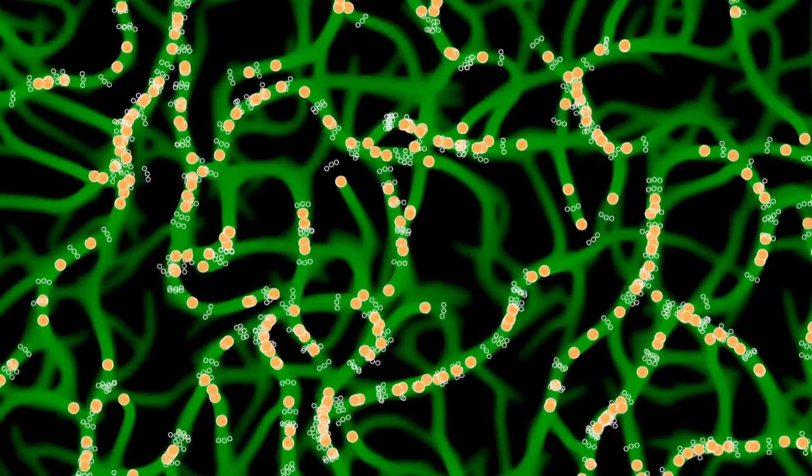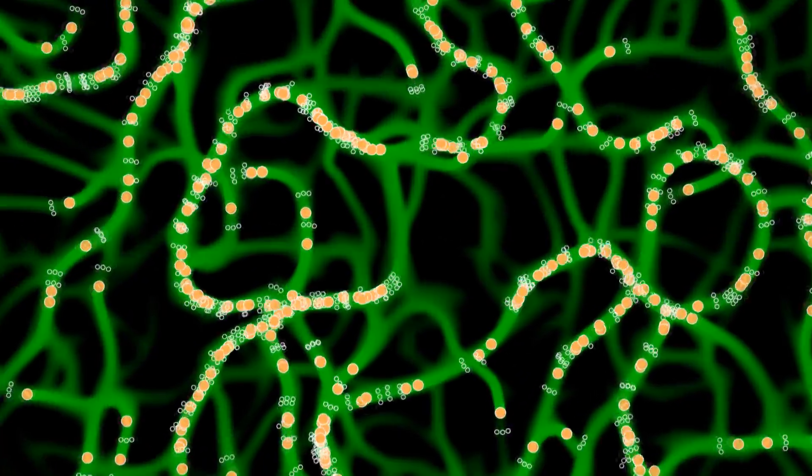The essence of the algorithm is simple. Numerous agents rush across the field, leaving pheromone trails. They prefer going where there is more pheromone. By slightly changing the parameters of the agents, we can get interesting results.